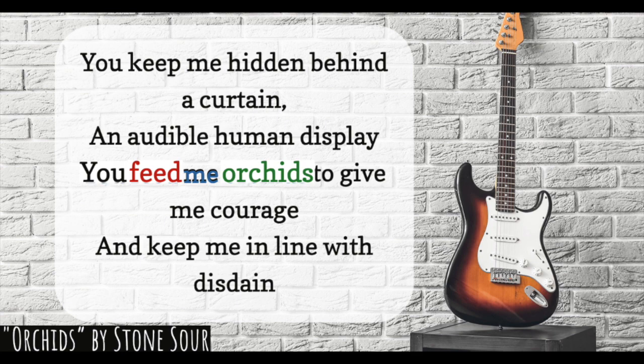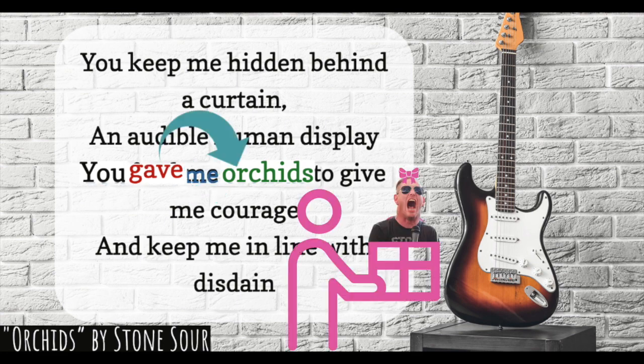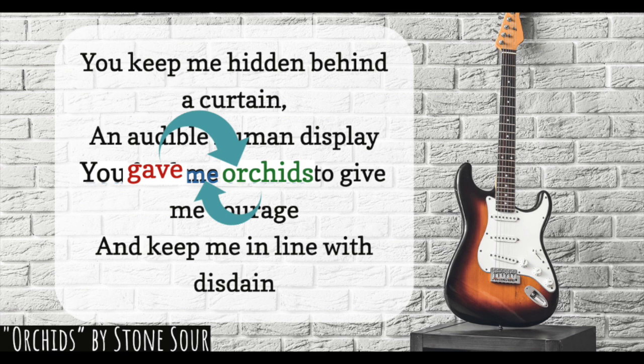How did you do? Did you get this one, or did you mix up the direct object and indirect object? If you did, blame it on the verb 'feed.' It would seem like 'me' is the direct object because you feed what — you feed me. But actually, if you think of this as 'gave' — you gave me orchids — you don't give me as a gift to someone. You're giving orchids to me. So 'me' is the indirect object; it's receiving the direct object.